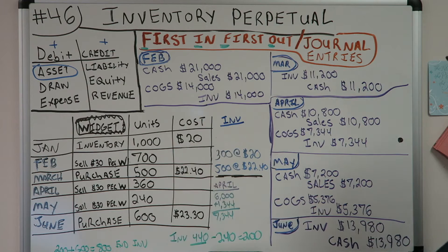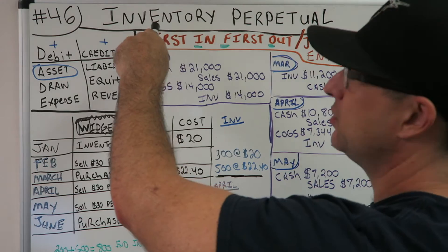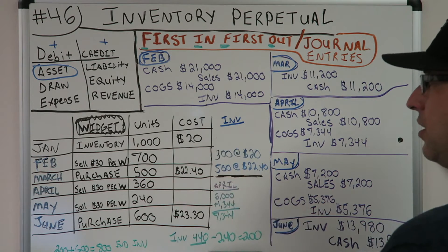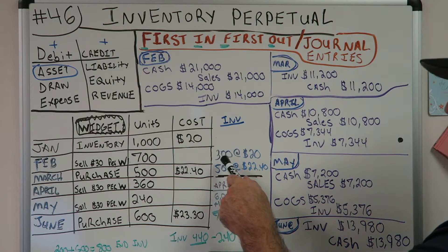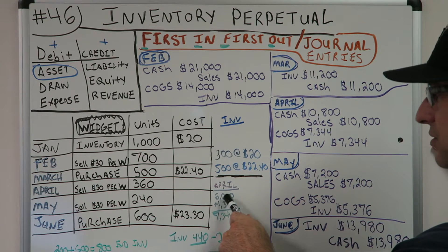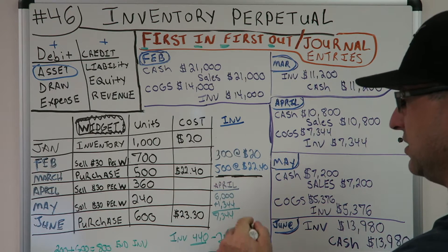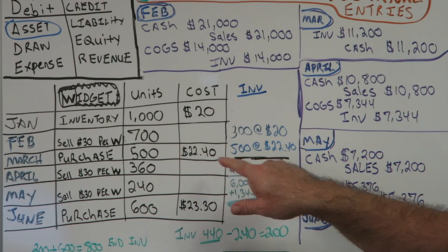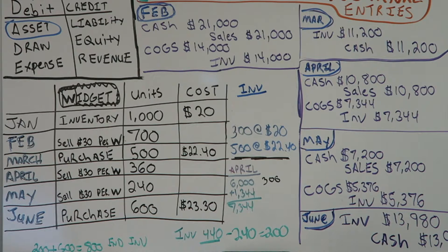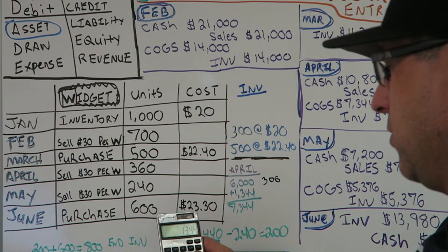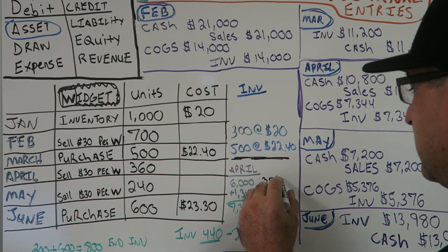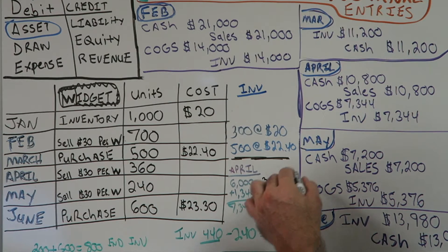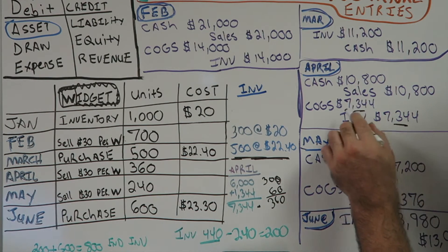We're doing First-In First-Out. So what was the first in our inventory? The 300 units at $20 — they're first in, so they're first out. We're selling 360, so we sell all 300 of those first: 300 times $20 equals $6,000. We still need 60 more units, so we take 60 from the next layer — the ones at $22.40: 60 times $22.40 equals $1,344. So the total COGS is $6,000 plus $1,344 equals $7,344.